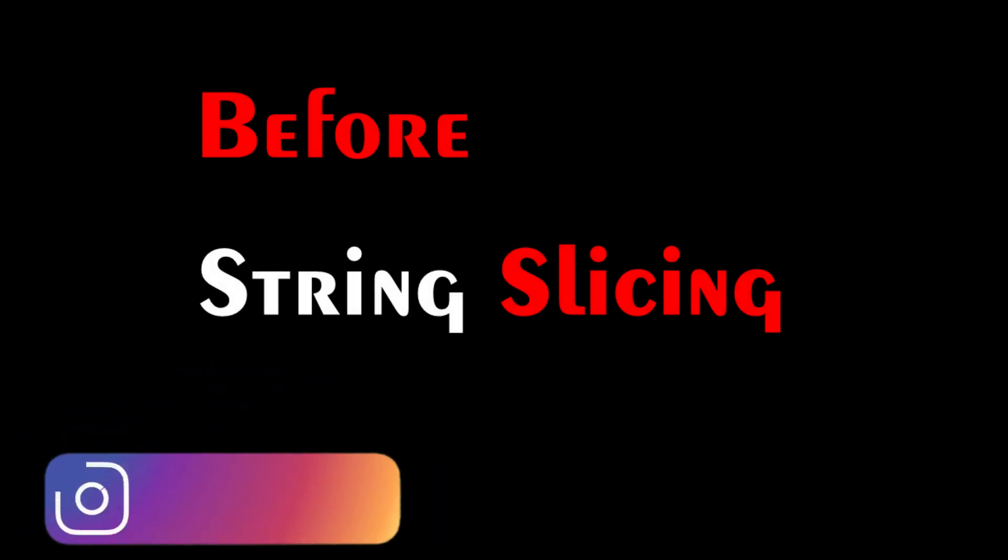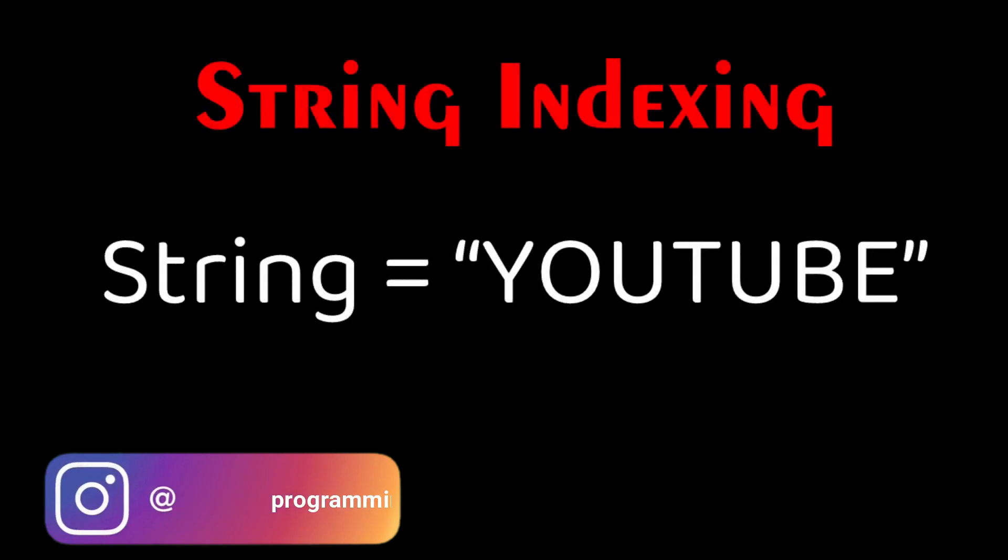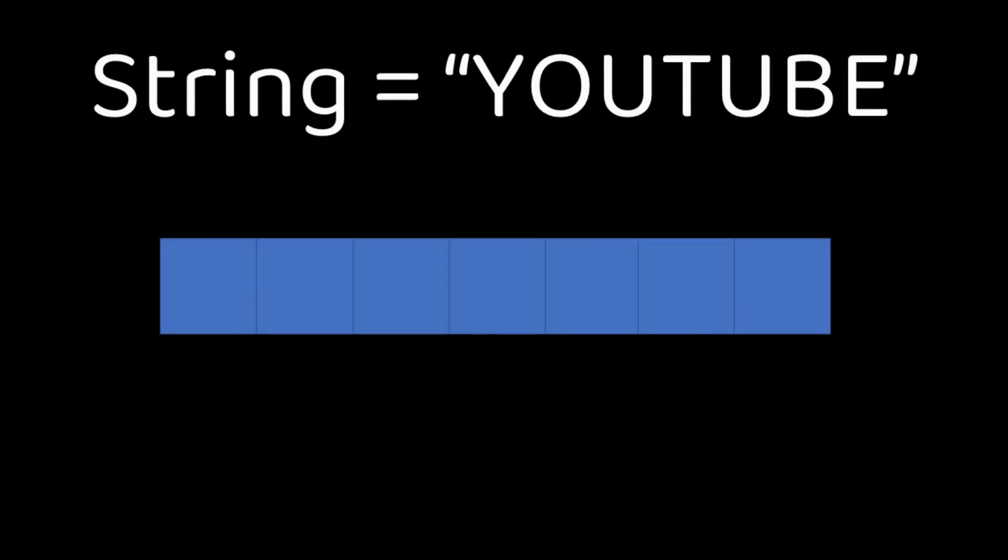Before string slicing, let's learn how Python assigns index to each element in the string. Let us consider a string variable assigned to a string YouTube. There are 7 characters in the string, so we allocate 7 boxes for indexing.